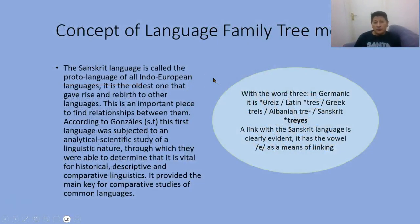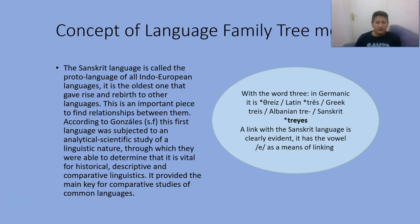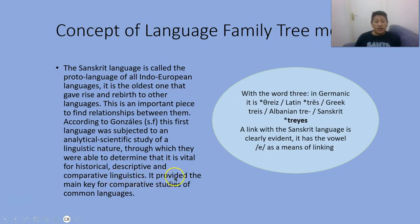The concept of the language family tree model: Sanskrit. The Sanskrit language is called the proto-language of all Indo-European languages. It is the oldest one, and it gave rise to other languages. Sanskrit is the parent language from which other languages derive. This is an important piece in finding relationships between them. According to Gonzalez, it was the first language subjected to an analytical scientific study of a linguistic nature, through which they determined it is vital for historical, descriptive, and comparative linguistics. It provides the main key for comparative studies of common languages.